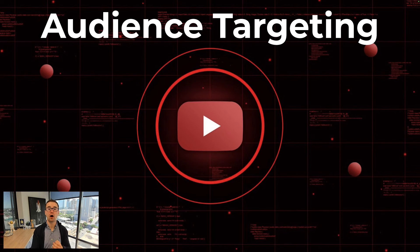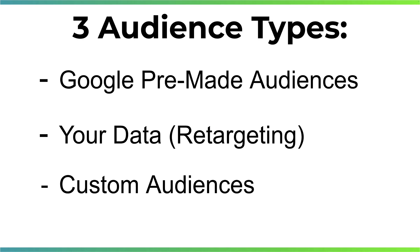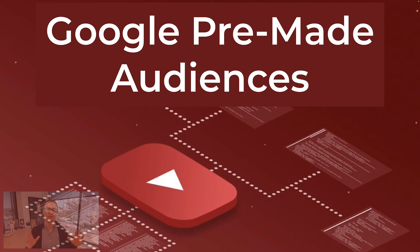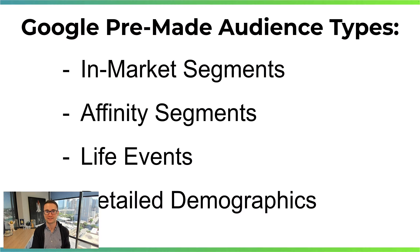When it comes to audience targeting, this is where you use YouTube and Google's data to reach your ideal clients. There are three main audience types inside Google and YouTube: Google pre-made audiences, leveraging your own data and retargeting, and custom audiences that you build yourself. That's where it gets really exciting — let's talk about Google pre-made audiences first.